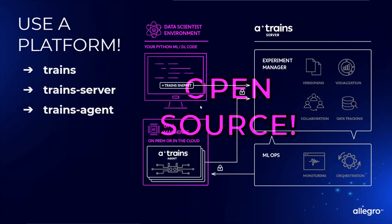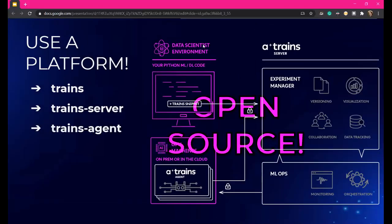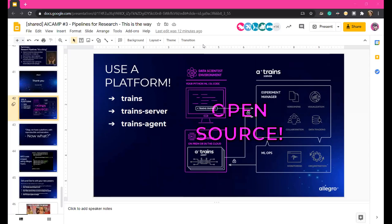What you're getting is trains — the Python package — trains server, and trains agent, the package that works on the remote machine. Once you get them all installed and running, that's it — you have a full working MLOps platform with resource tracking. I've answered all the questions. Hit me up on whatever platform you like — our Slack channel, Reddit, LinkedIn. And even if you have further questions later, try the YouTube comments. Thank you very much.